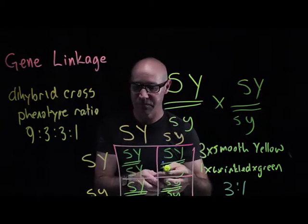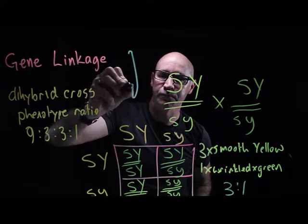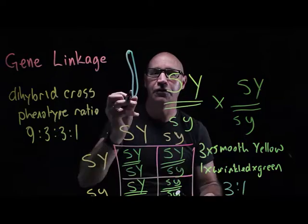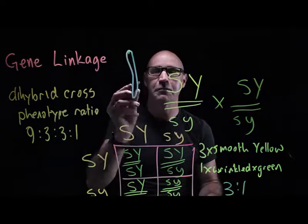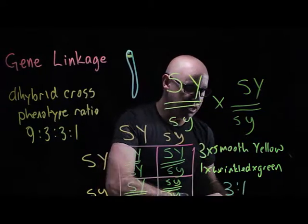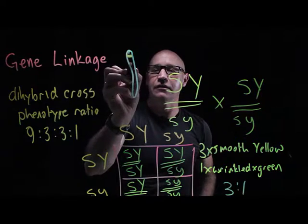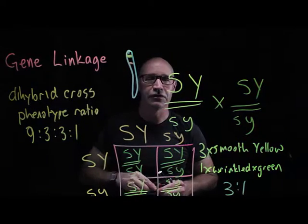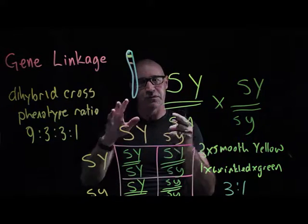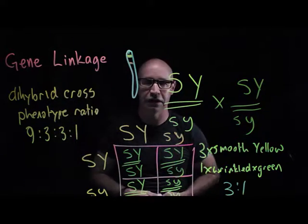One of the reasons we wouldn't get a 9:3:3:1 ratio in a di-hybrid cross is if the two traits are on the same chromosome. We can picture a chromosome where the smooth or wrinkled gene is located at one position, and the gene for seed color is located somewhere else along the same chromosome. They don't get independent assortment — they're linked, and that's what we call gene linkage.